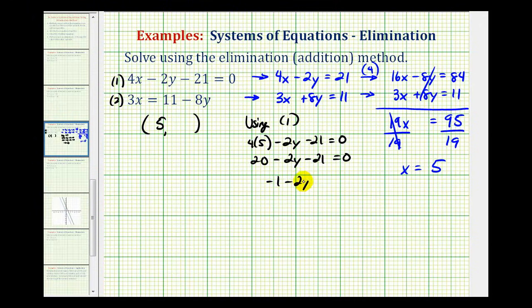So we have negative 1 minus 2y equals 0. Add 1 to both sides, we get negative 2y equals 1. Divide both sides by negative 2, we have y equals negative 1 half.